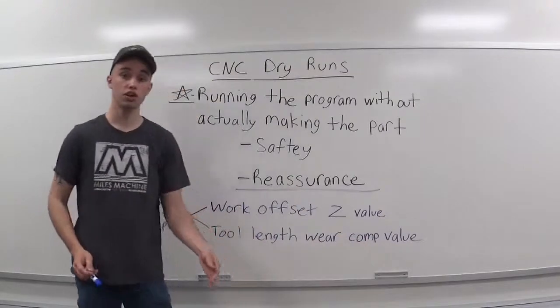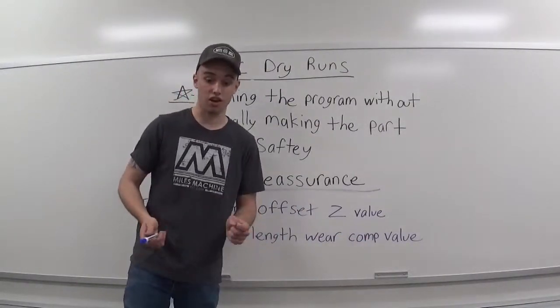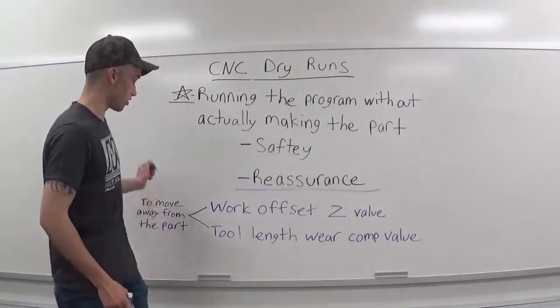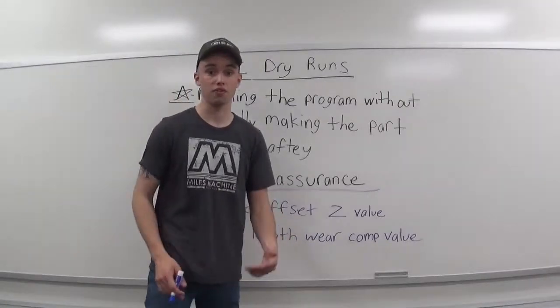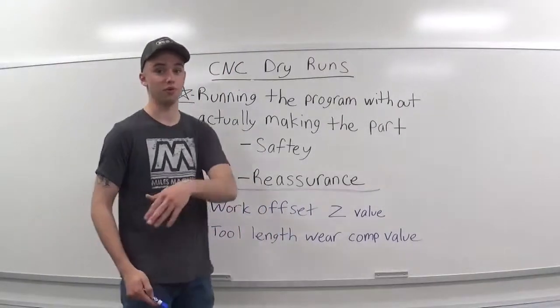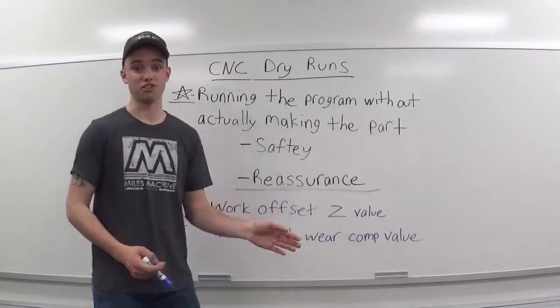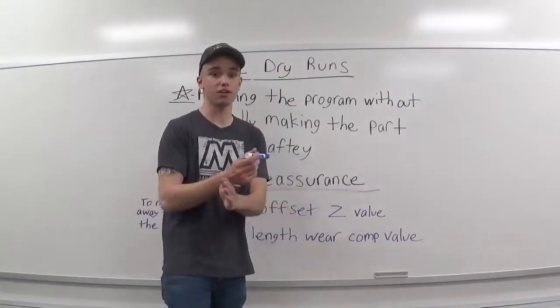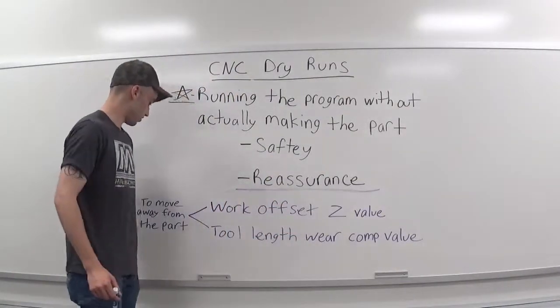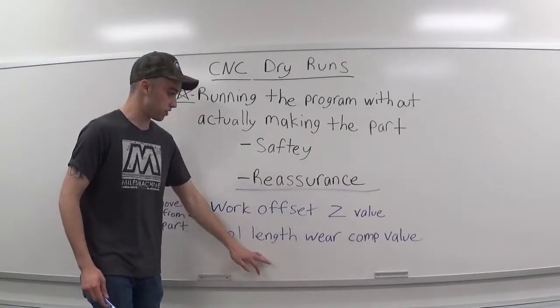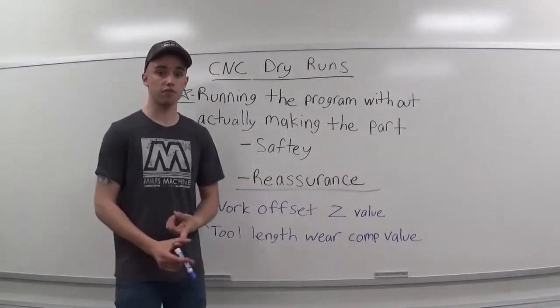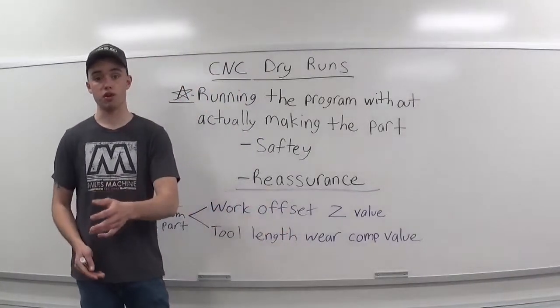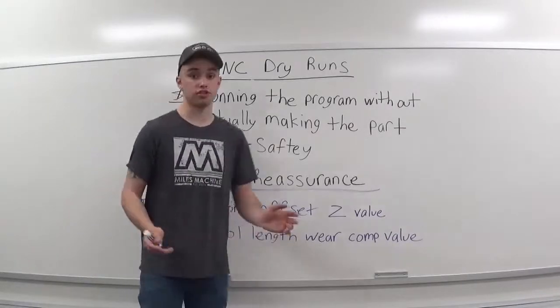And, you can do the tool length wear comp value to ensure every tool is picking up that four inches or three inches or whatever value you decide to choose. Because if you do your work offset, let's say you have two different work offsets and you kind of forget that you had two different work offsets. Only one of them is set to the four inches above your part and then the other one's set still at zero. Then, all of a sudden, your tool might come in and you're like, whoa, what just happened? So, these values, whether you're plugging in a positive value for your wear or your Z value or negative, that's all based on how you made your program. So, just pay attention when you are changing that.